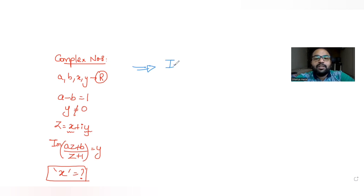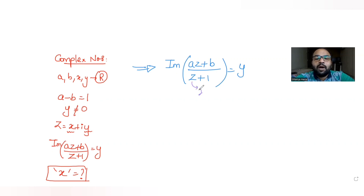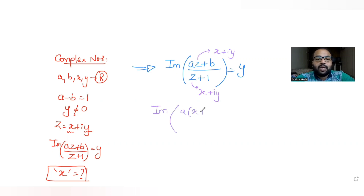Let's start solving. We have the imaginary part of (az + b)/(z + 1) equal to y, and we know z = x + iy. So I can replace z with x + iy. Doing that, I get the imaginary part of (a(x + iy) + b) / (x + iy + 1) equal to y.